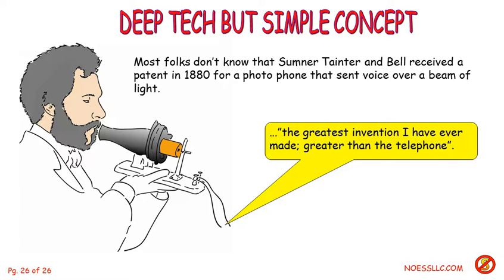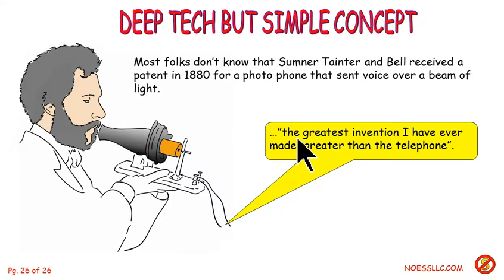This is really, really deep tech. It's a light bulb and a photo cell at the high level — which is true — but this is some deep, deep tech; really complicated stuff, particularly when you start talking about the kinds of fibers and all the impairments that can take place. But the concept is very simple — so simple that in 1880 Bell got a patent for the photophone and sent his voice over a beam of light. Direct quote from him: 'The greatest invention I have ever made, greater than the telephone.' Unfortunately, it took a hundred and some years to get to a system that really could work.